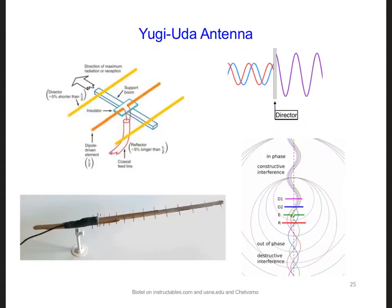A Yagi-Uda antenna has a radiating half-wave dipole, which is right here. And there's a reflector behind it. The reflector is just slightly longer than a half wavelength. So the radiating dipole is a half wavelength. This one right here is slightly longer. And then there is some number of directors in front of the radiating dipole. And these are slightly shorter than a half wavelength.